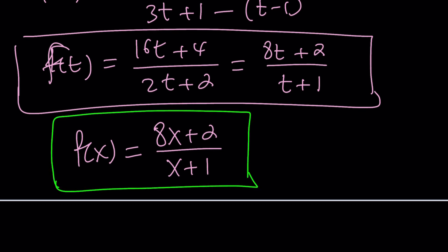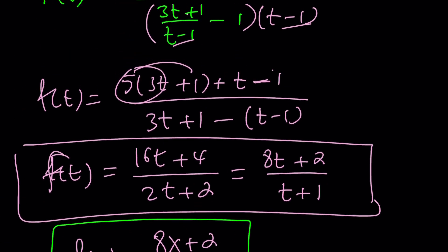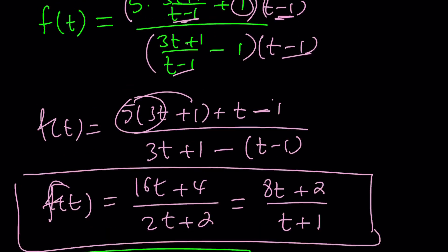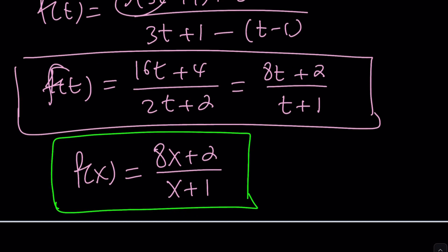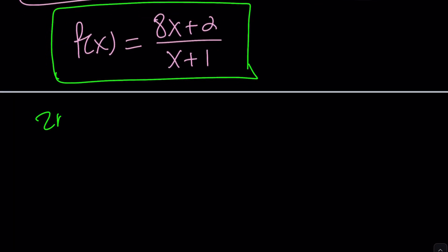Now I'm going to go ahead and do this problem a little differently and see if we can get the same answer. If not, then I made a mistake, and hopefully you're going to help me find it. So that's f of x. Let's go ahead and take a look at the second method.